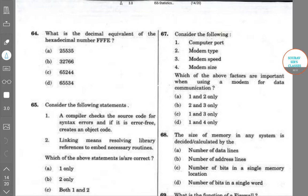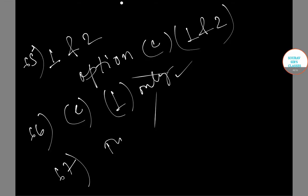Let's do the question then. Modems type and speed are important when using a modem for data communication. So option B is correct and 2 and 3 consideration are right.